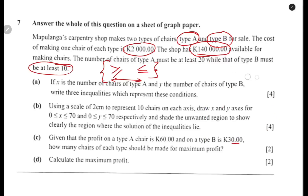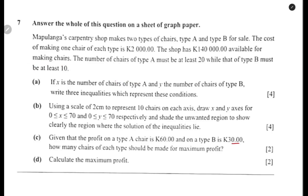Let us look at the question. The first question, part A: if X is the number of chairs of type A and Y is the number of chairs of type B, write the three inequalities which represent the conditions.